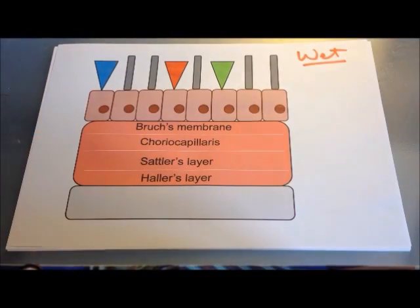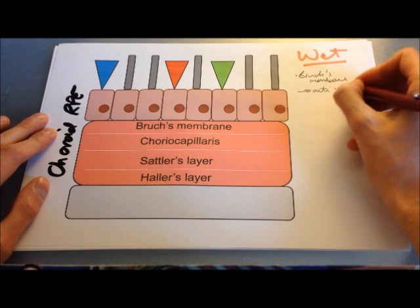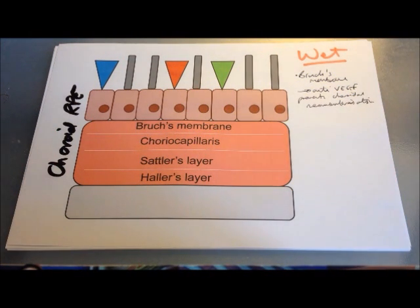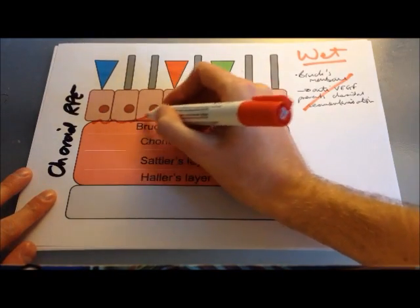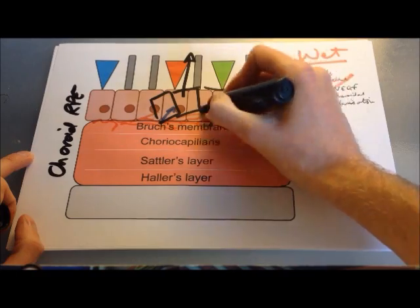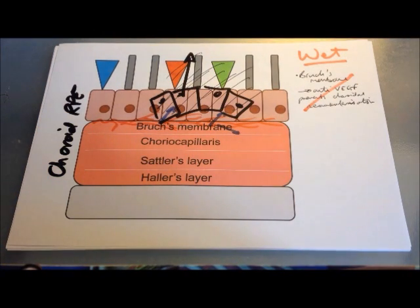Moving on to wet age-related macular degeneration. This again involves Bruch's membrane — specifically, it involves angiogenesis. Normally Bruch's membrane produces anti-VEGF molecules that stop VEGF from the retinal pigment epithelium crossing into the choroid and producing neovascularisation. With age, Bruch's membrane gets thinner and reduces the anti-angiogenic proteins it produces, increasing the risk of neovascularisation. New choroidal blood vessels grow underneath the retinal pigment epithelium; these vessels are leaky, fluid leaks out, and they push the retinal pigment epithelium away from the underlying choroid, leading to death of the photoreceptors.